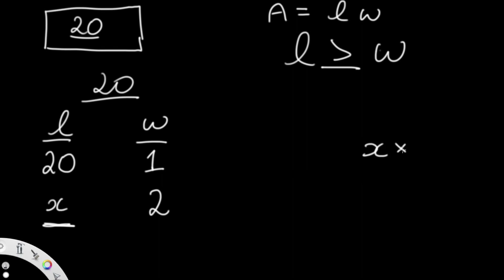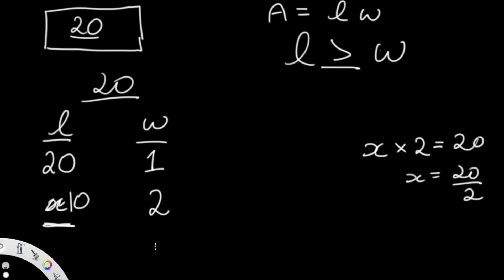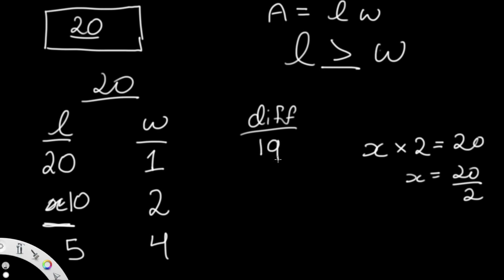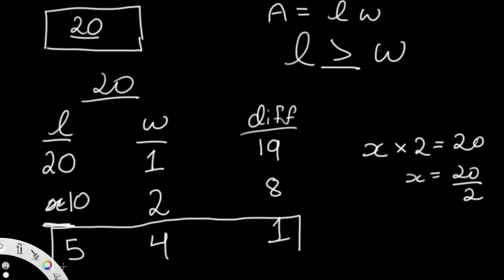So x × 2 = 20 means x = 20 ÷ 2 = 10, so length = 10. One last combination: width = 4, length = 5. Looking at the differences: 20−1 = 19, 10−2 = 8, and 5−4 = 1. The least difference is 1, so width = 4 and length = 5 is our answer — we return [5, 4].